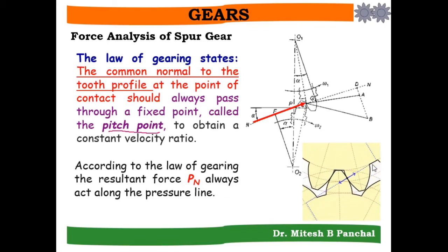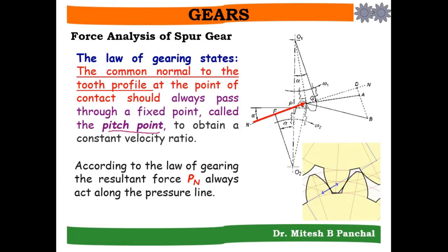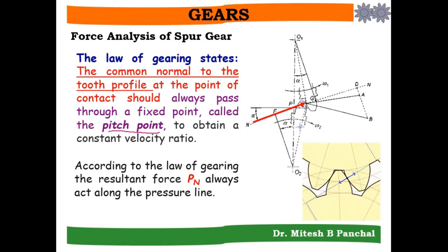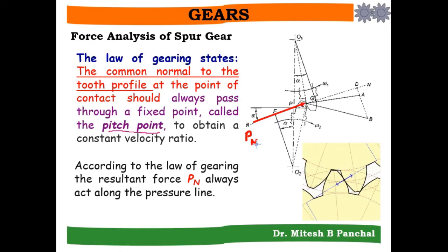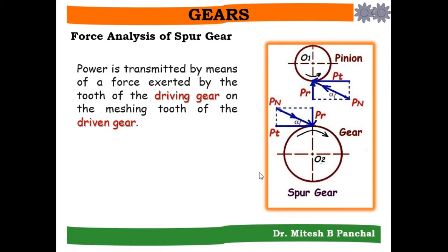The blue dashed line shown here is the pressure line, so the resultant force Pn will always act along it. In this figure, the arrow represents the force Pn, which acts at the contact point of two mating teeth. In the gear train, the power is transmitted by means of a force exerted by the tooth of the driving gear on the meshing tooth of the driven gear.